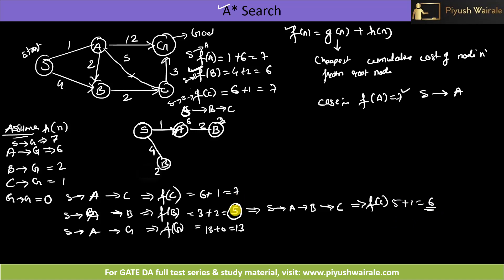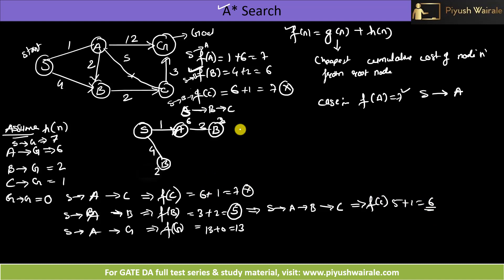Now f(C) via S→B→C is 7 and f(C) via S→A→C is also 7, but here f(C) via S→A→B→C is 6. So we eliminate the two higher-cost paths for C. The best path to C has f(C)=6, via S→A→B→C.